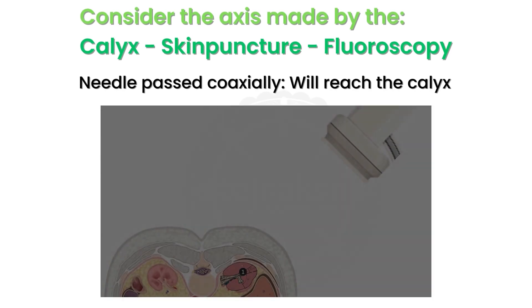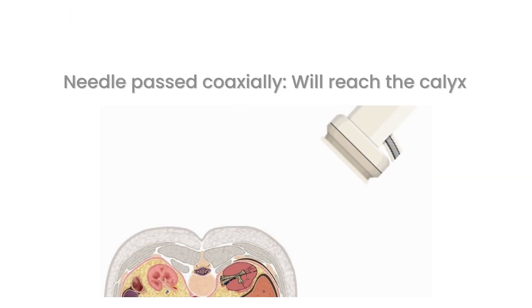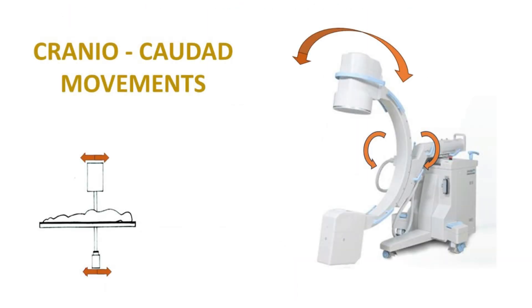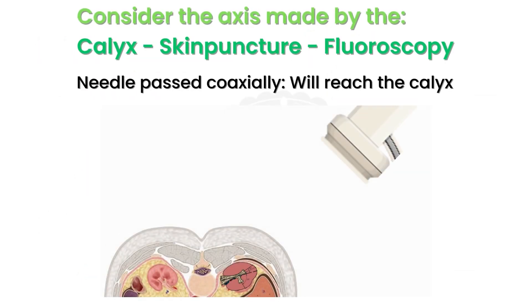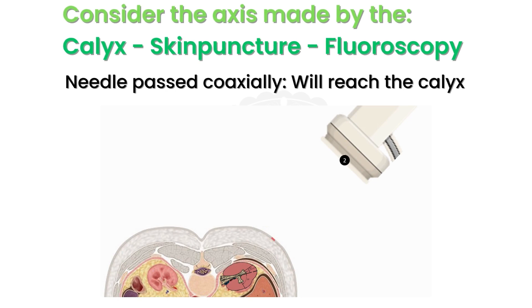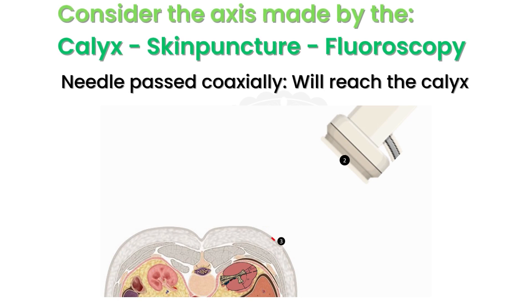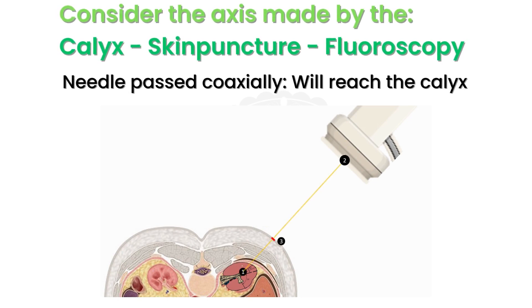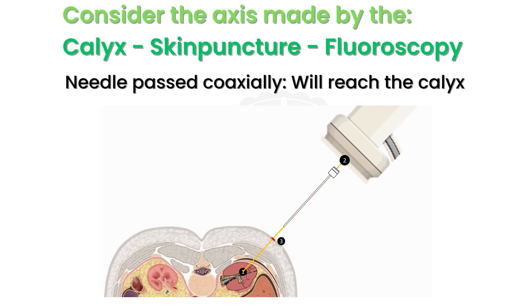Ask for apnea in expiration and turn the C-arm to approximately 30 degrees. The C-arm can additionally be rotated craniad or caudad to bring it more in line with the axis of the infundibulum of the selected calyx. Make a skin stab over the desired calyx. Now the target calyx, the skin stab, and the C-arm camera all lie in a single straight line.